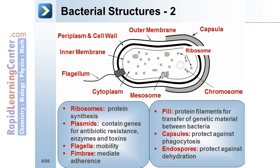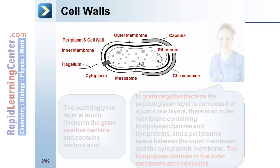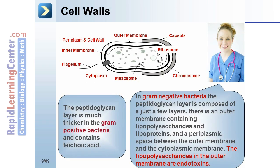To protect against phagocytosis, capsules are produced that are composed of polysaccharide. These structures can also aid in the attachment of bacteria to surfaces — for example, indwelling catheters, formation of biofilms, and acting as antigens. Some bacteria form endospores, which help protect them against dehydration, heat, and other environmental pressures.